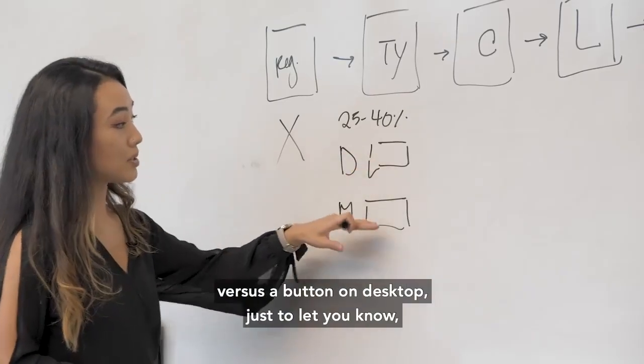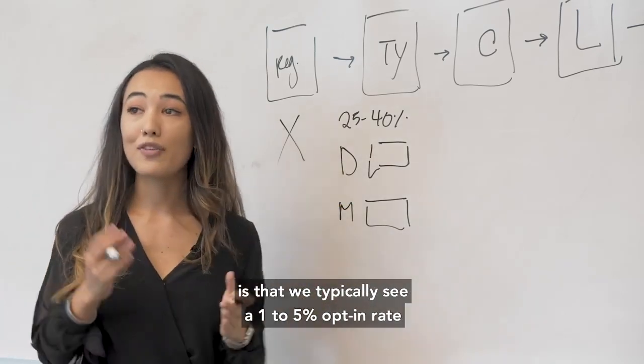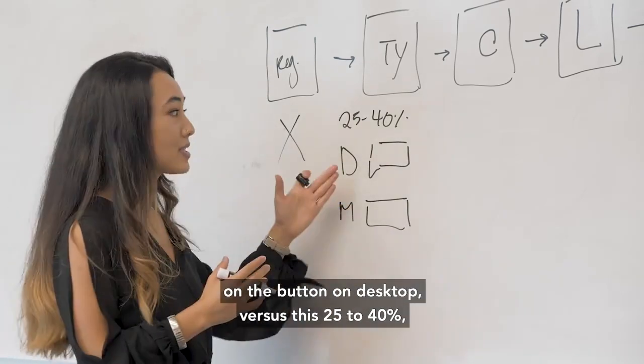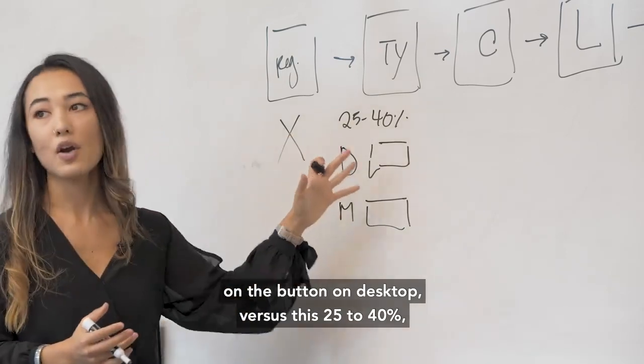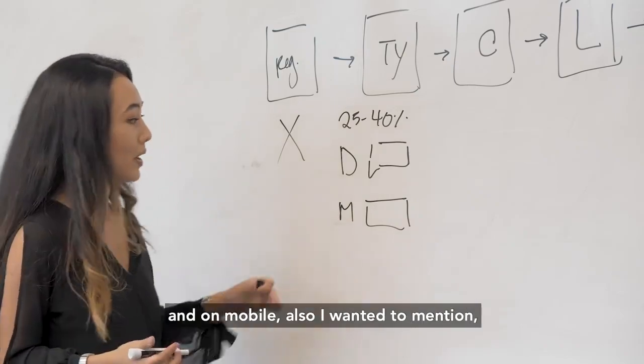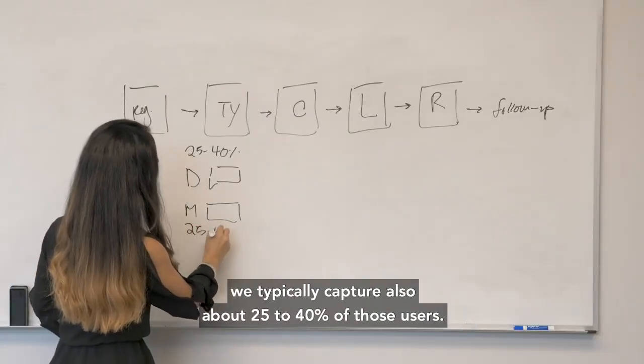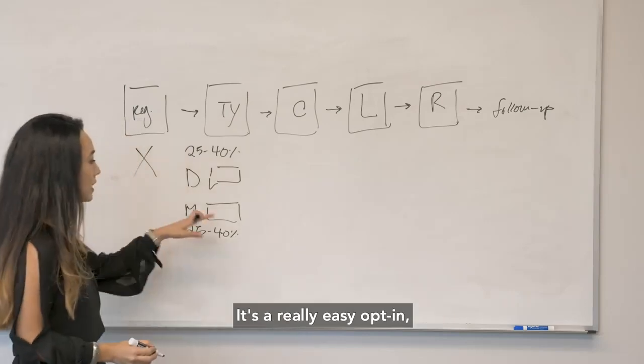Now, the reason we do a chat widget versus a button on desktop is that we typically see a 1% to 5% opt-in rate on the button on desktop versus this 25% to 40%, which is a huge difference. And so that's why we just see what works really well. And on mobile, we typically capture also about 25% to 40% of those users. It's a really easy opt-in.